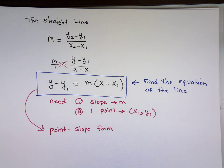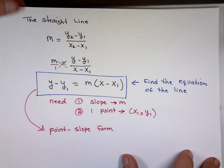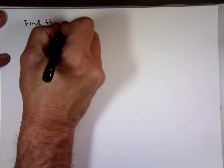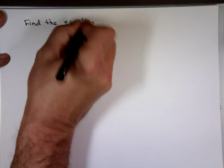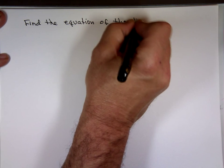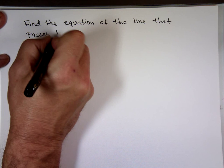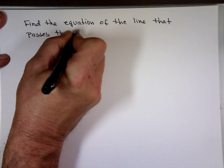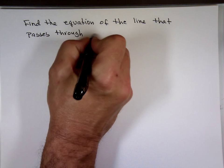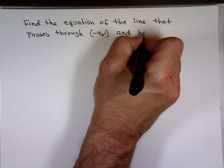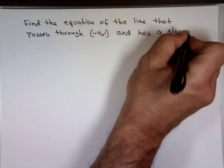Let's take an example. Find the equation of the line that passes through negative 4 and 1, and has a slope equal to negative one-half.